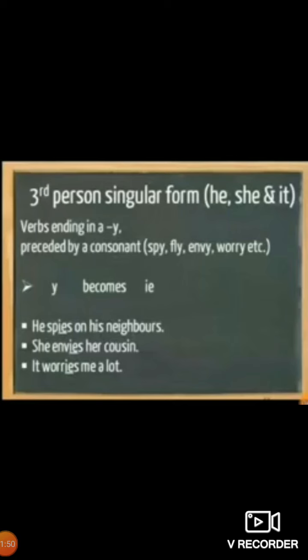Here are a few rules. For verbs ending in Y preceded by a consonant — for example: spy, fly, envy, worry — the Y is removed and IES is added. So spy becomes spies: 'He spies on his neighbor.' 'She envies her cousin.' 'It worries me a lot.' IES has been added here.